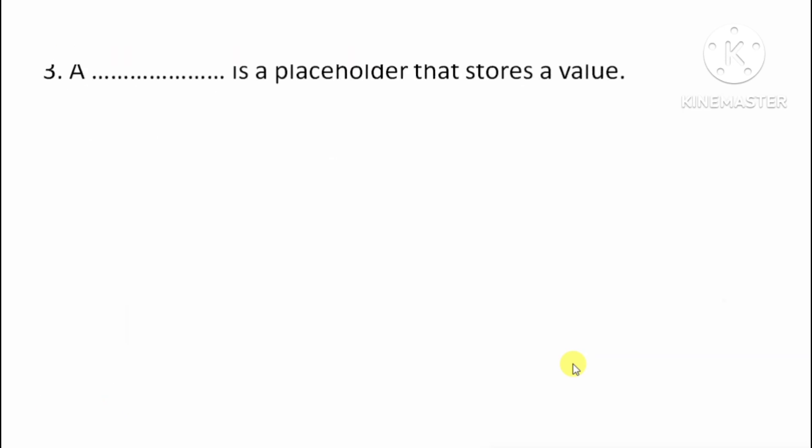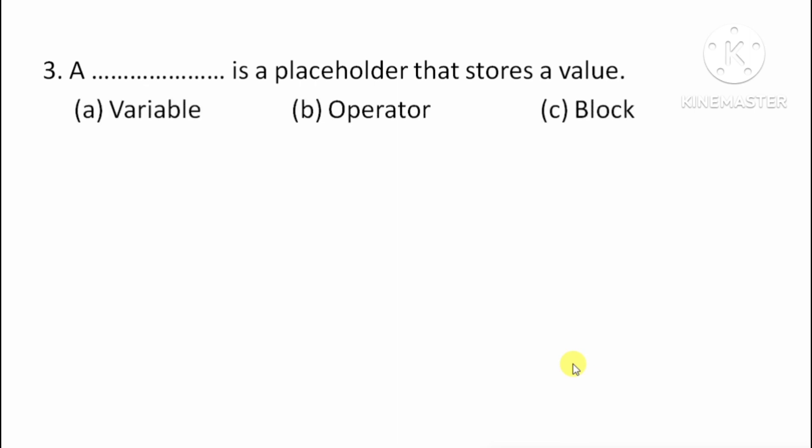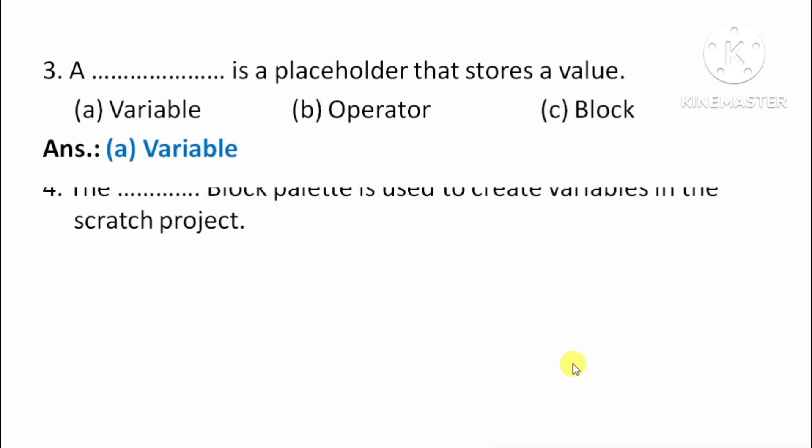Next question: A placeholder that stores a value is called what? Yaha placeholder hai jo values ko store karta hai, ise kehte hain — Option A: Variable, Option B: Operator, Option C: Block. The right answer is Option A: Variable.